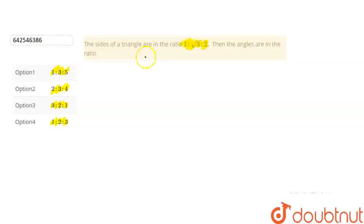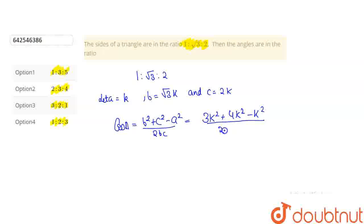Let's start this problem. As we are given that the sides are in the ratio 1 : √3 : 2, let a = k, b = √3k, and c = 2k. By using the formula cos A = (b² + c² - a²) / 2bc, putting the values we get (3k² + 4k² - k²) / (2 × 2 × √3k²), which gives us √3/2. So the value of angle A is π/6.